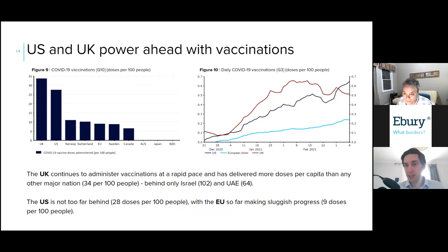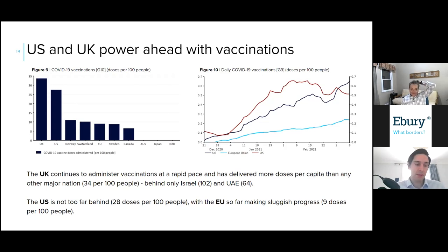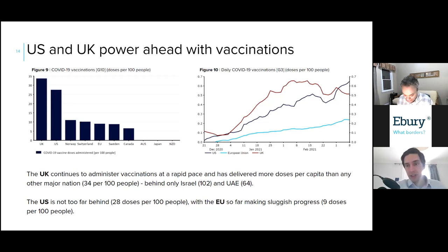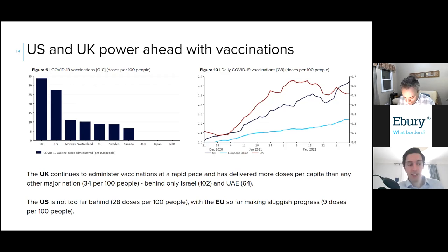The longer this goes on, the more investors are going to push back their timing for when the European economy can reopen, the more they will price in underperformance in the euro area economy, and the more downside risk this provides to the euro. The pace of vaccinations should begin to pick up, particularly once the one-shot Johnson & Johnson vaccine is approved — it's already been approved in the US and is likely to be approved in the EU in the next two or three weeks. We are generally positive and confident we'll see a pretty significant pickup in activity certainly in the second half of this year.